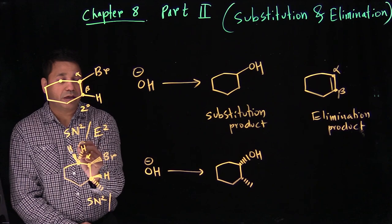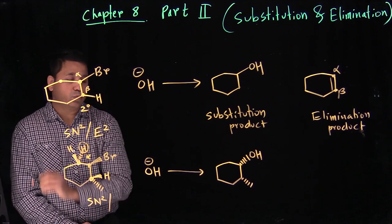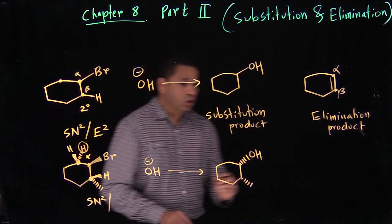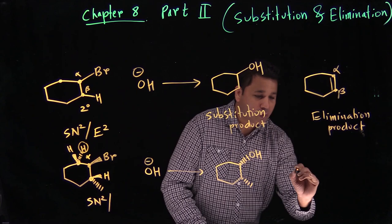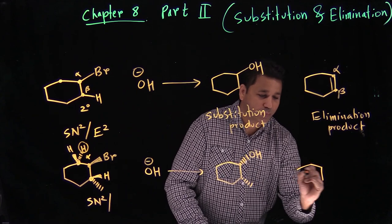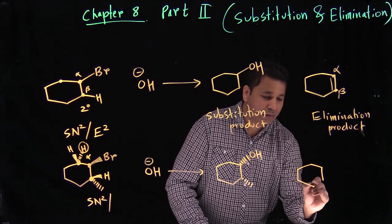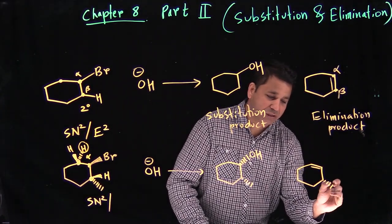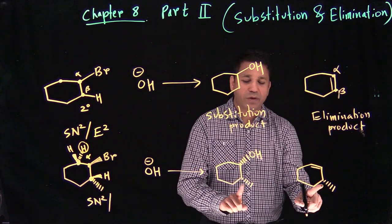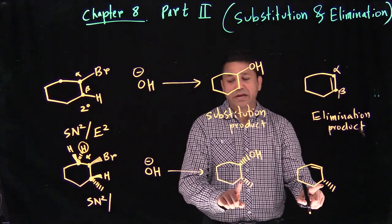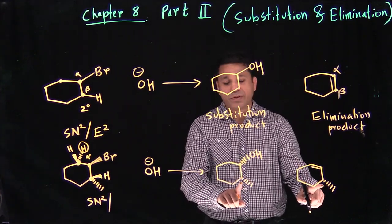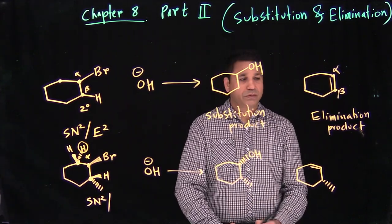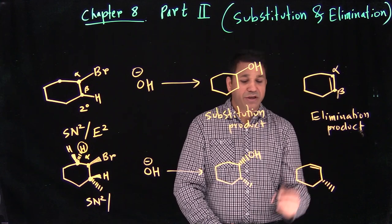We can only do elimination with beta one. The base removes the hydrogen from beta one, forming a double bond between alpha and beta one. We haven't touched the other parts of the molecule, so those stay the same. That is your elimination product — that's your alpha and beta carbon.